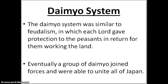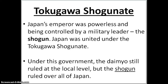The daimyo system is going to be similar to feudalism, in which each lord gives protection to the peasants in return for them working the land. Eventually, a group of daimyos are going to join forces and unite all of Japan. Under the Tokugawa shogunate, Japan's emperor was powerless and controlled by the military leader — the shogun. The daimyos still ruled at the local level, but the shogun ruled all of Japan.